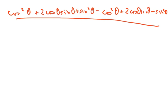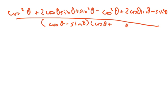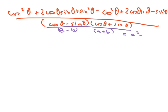Now my denominator — we had cosine theta minus sine of theta, times cosine of theta plus sine of theta. And you should know that this is your a minus b times a plus b, which equals a squared minus b squared. So cleaning up my numerator, those terms cancel.